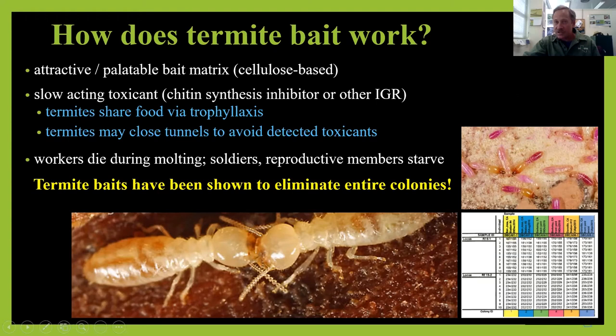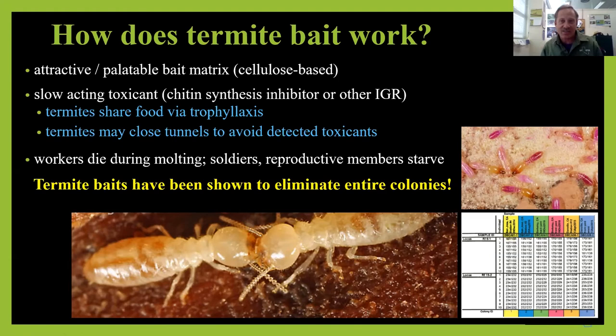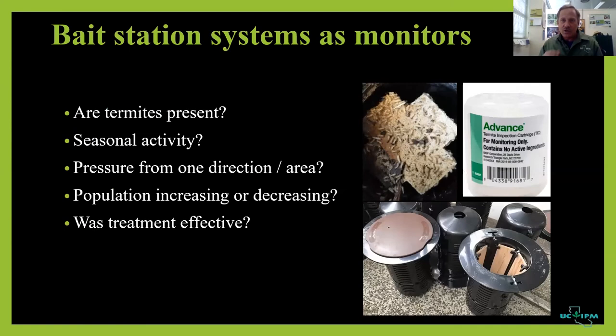Research has confirmed colony elimination using baits. Termites can be marked with dye or characterized by DNA to track colonies. We collect termites feeding on bait, then look to see if that colony appears again elsewhere. In most cases, once termites have been collected feeding on baits, they are never seen again at that site. Bait stations can also be used as monitors — there are termite inspection cartridges with no insecticide, only cellulose, that can be checked regularly by a professional to identify problems and termite species before moving forward with management.